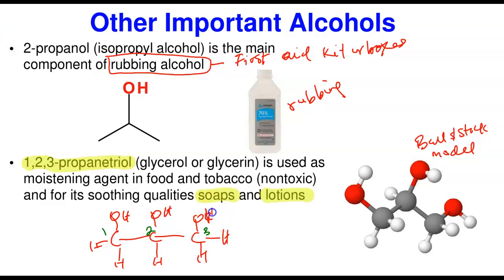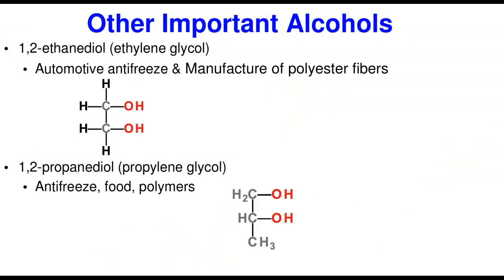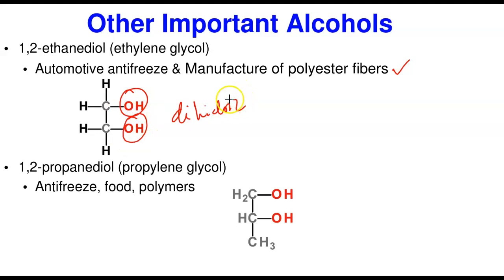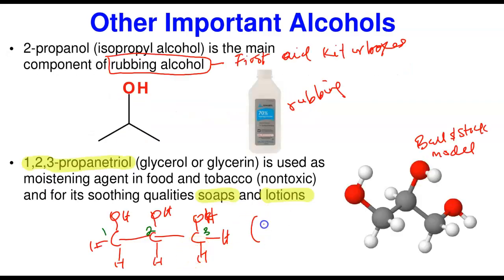Next is 1,2-ethanediol, also called ethylene glycol. It is a common automotive antifreeze and is also used in the manufacture of polyester fibers. It is a dihydric alcohol — meaning it has two OH groups. Since it has only two carbons, it is named 1,2-ethanediol, and can also be called a diol.